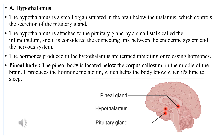The next gland is called the pineal gland. The pineal gland is located below the corpus callosum, which is in the middle of the brain. It produces the hormone melatonin, and melatonin helps the body know when it's time to sleep.